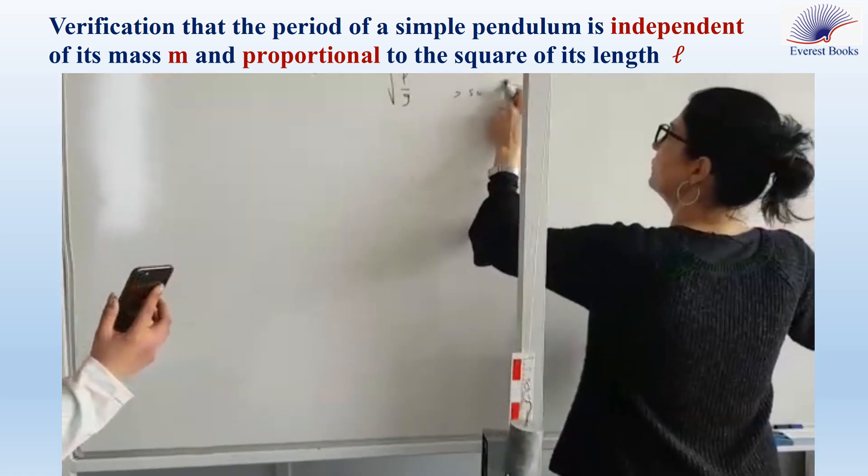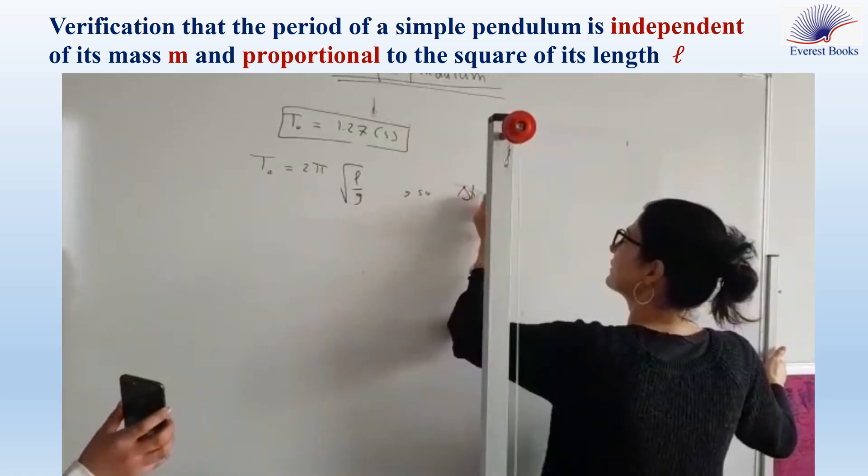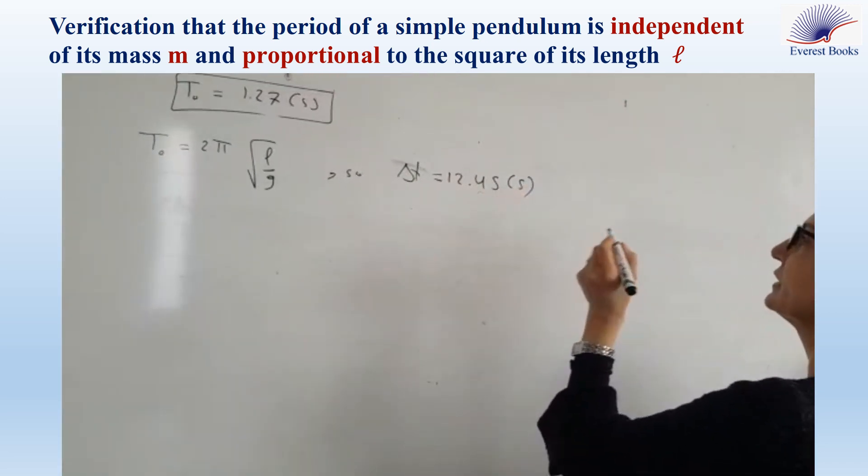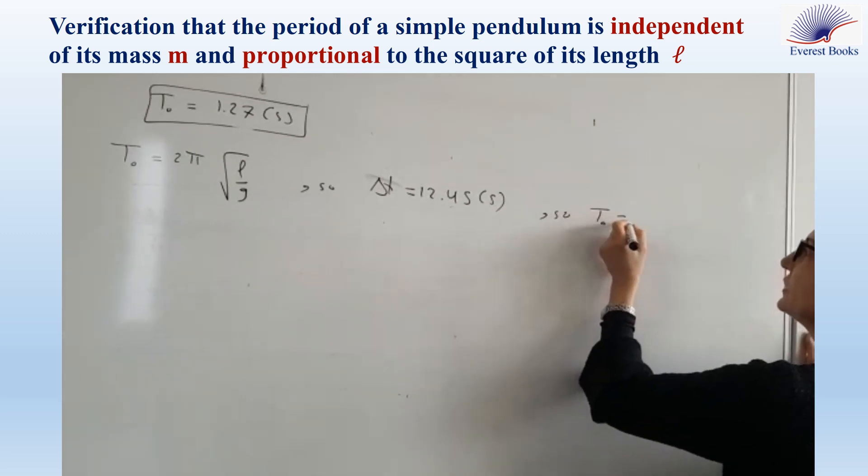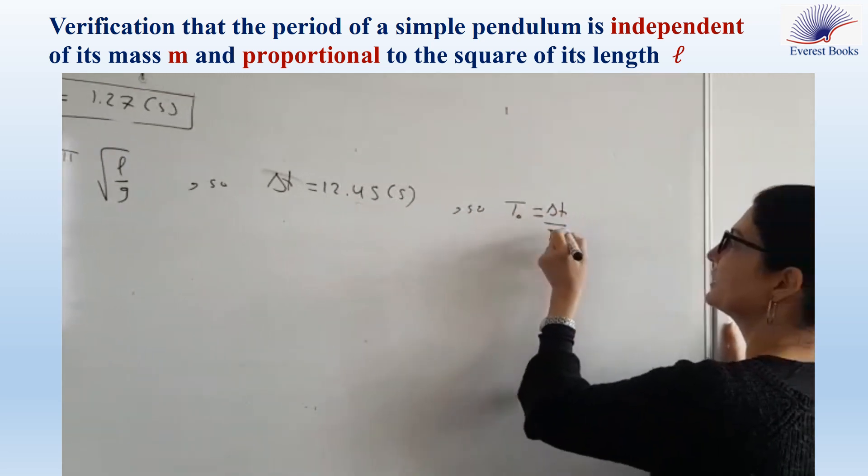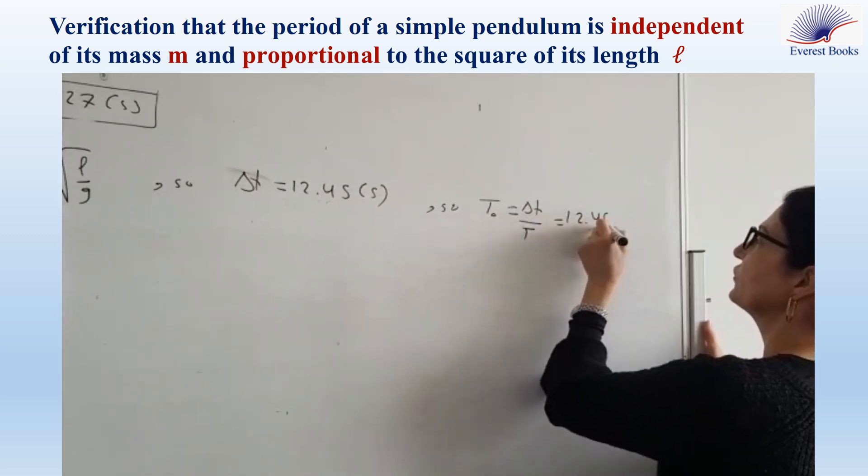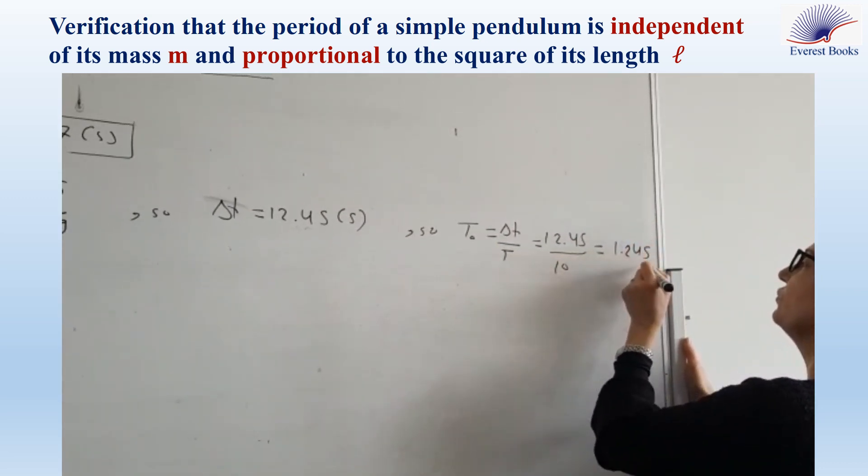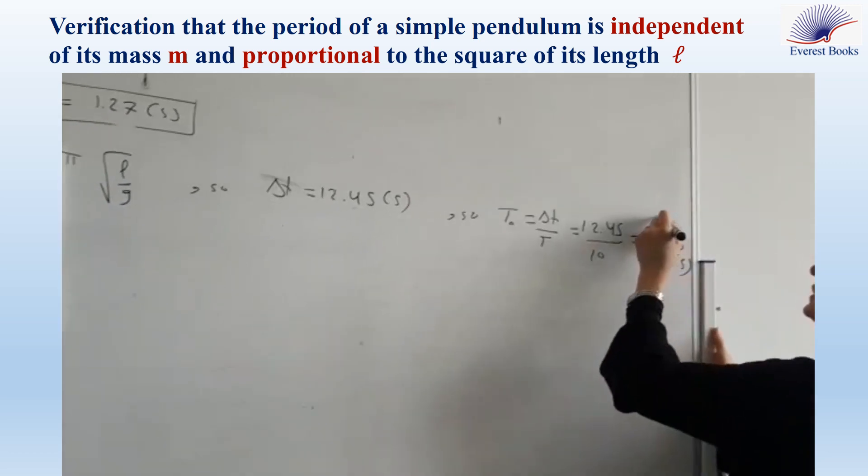So, what is delta T? 12.45 seconds. So T0 is equal to delta T over 10, which is equal to 12.45 over 10, and the answer is 1.245 seconds.